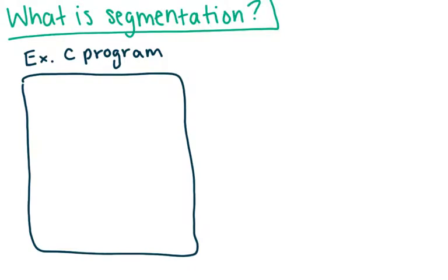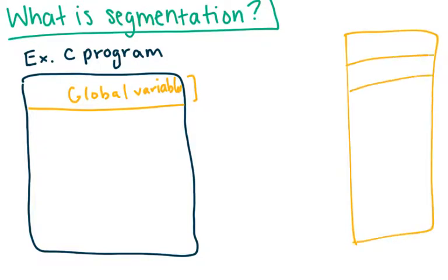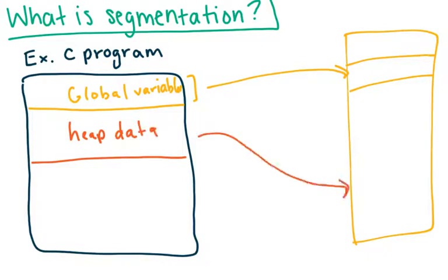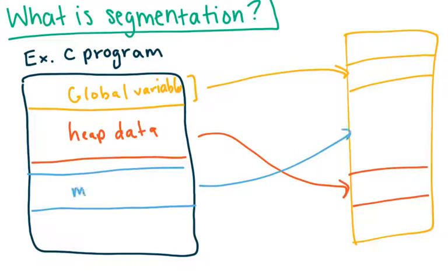An example of how this would happen in a C program: you may have one segment that contains all of your global variables, and so that segment could be stored somewhere in physical memory. All of your data elements that are pointers implemented onto the heap, you might store that in a different spot in memory. And then you might have your main code in a different spot. So it can be fragmented this way.